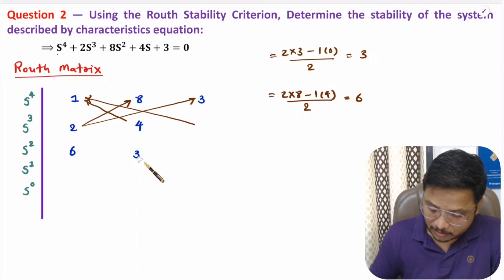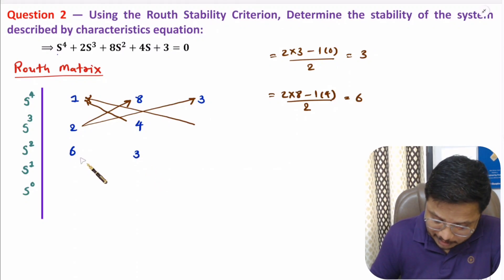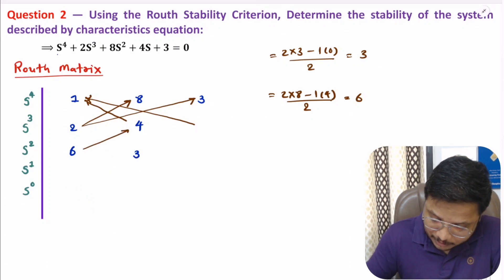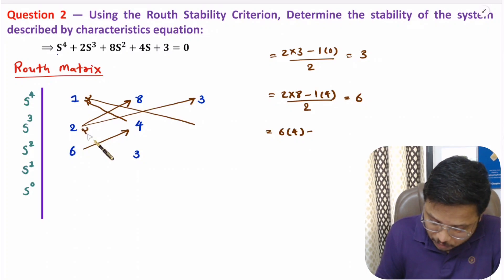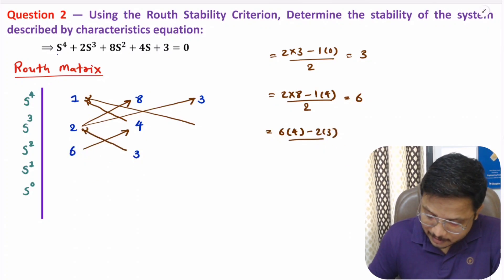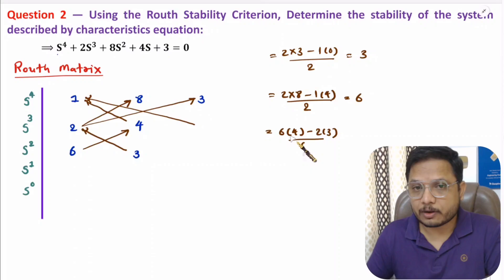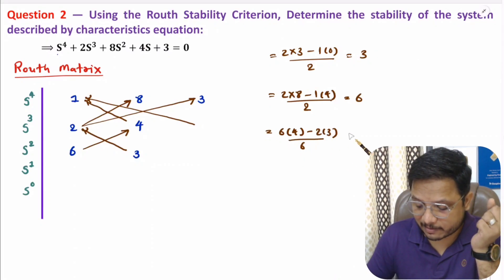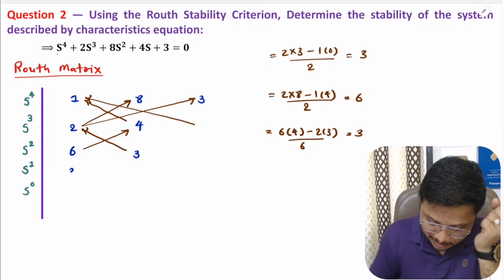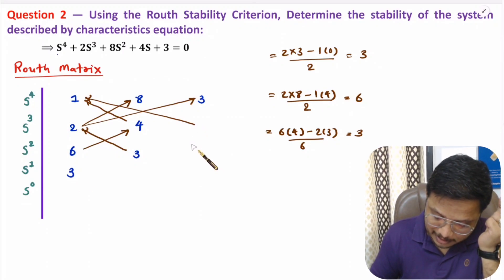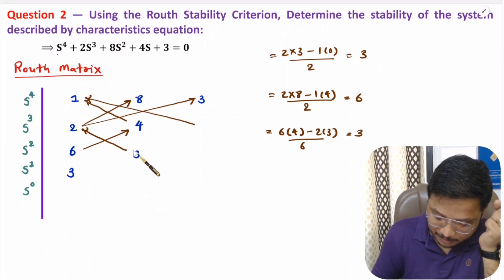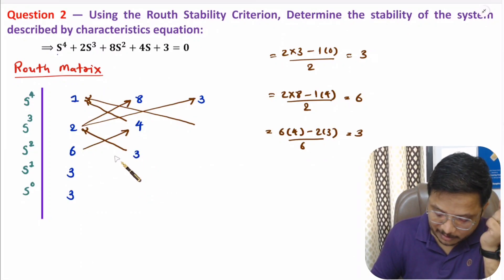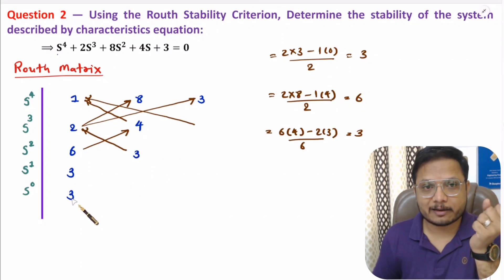For the s¹ row: (6×4 − 2×3) divided by 6 = (24−6)/6 = 18/6 = 3. If there are no remaining elements, that position is 0. Again, since the element to its right is 0, we can directly place the element above it, which is 3.